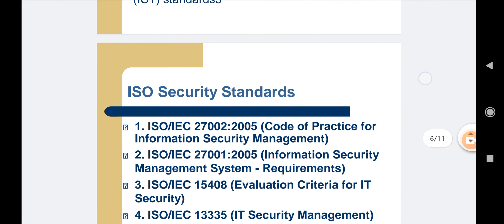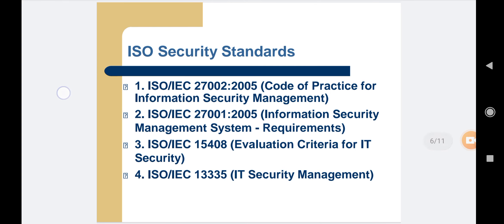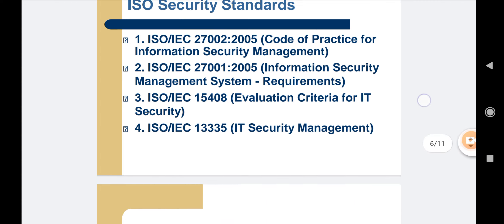The ISO security standard has defined several sub-standards. The first is the ISO 27002:2005, used as a code of practice for information security management. The second is ISO 27001:2005, which is an information security management system requirement. The third is ISO/IEC 15408, which provides evaluation criteria for IT security. The fourth is ISO/IEC 13335, used for IT security management.